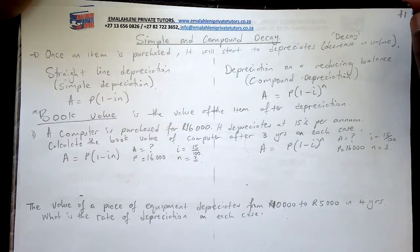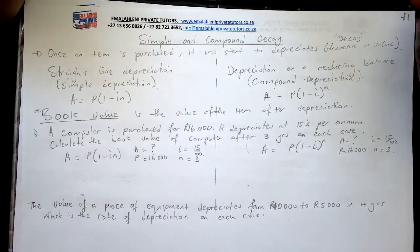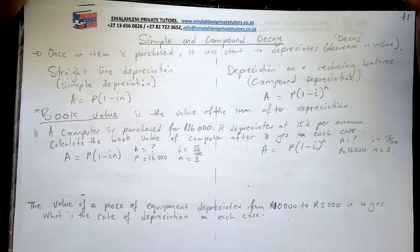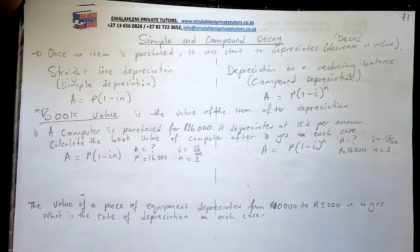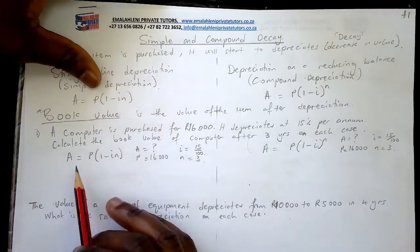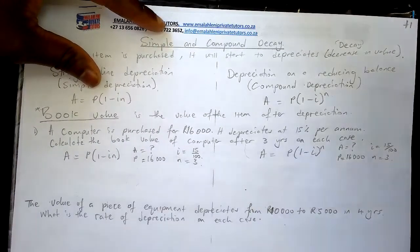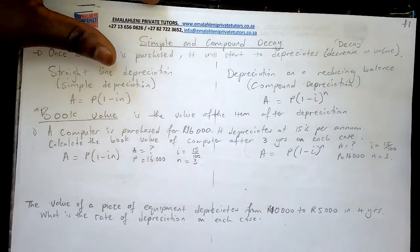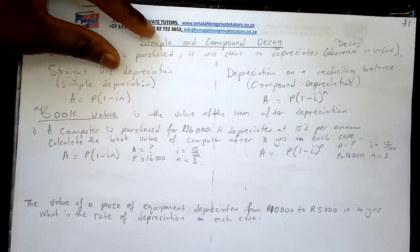We need to calculate the book value of the computer after three years, applying both straight-line depreciation and reducing balance depreciation. Straight-line depreciation is simple depreciation; reducing balance is compound depreciation. Always write the formula — you get a mark for your formula. The formula is: A = P(1 - in).